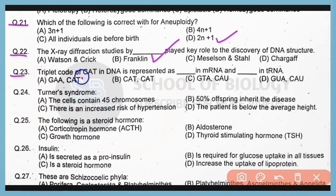Question 23. The triplet code CAT in DNA is represented by which codon in messenger RNA and anti-codon in transfer RNA? Correct answer is option D. If CAT is the DNA triplet code, the mRNA codon will be GUA, and the complementary tRNA anti-codon will be CAU.